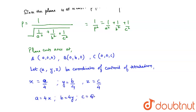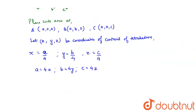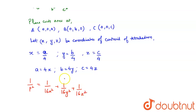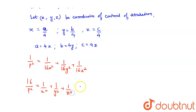So a equals 4x, b equals 4y, and c equals 4z respectively. Now putting these values into the equation for 1 upon p squared, I get 1 upon p squared equals 1 upon 16x squared plus 1 upon 16y squared plus 1 upon 16z squared. Transposing, I get 16 upon p squared equals 1 upon x squared plus 1 upon y squared plus 1 upon z squared.